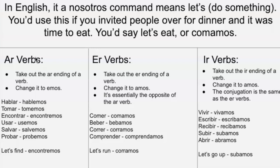So to start with the basic conjugations: when you have an AR verb, you take out the AR ending and change it to -emos. Here are some examples. 'Hablar' would become 'hablamos' — you take away the AR, you have 'habl,' and then add -emos. 'Encontremos' means 'let's find.' They all mean 'let's.' So this is 'let's speak,' 'let's talk,' 'let's take,' 'let's use.'